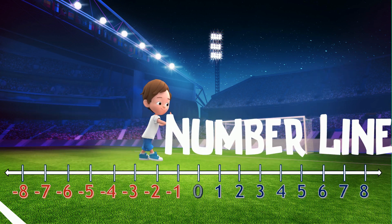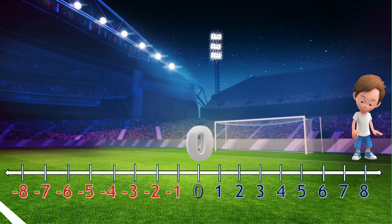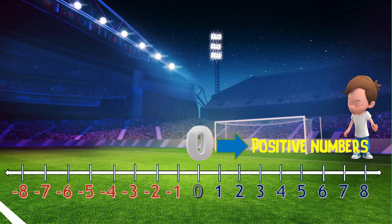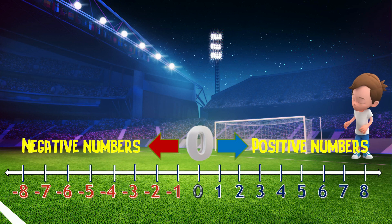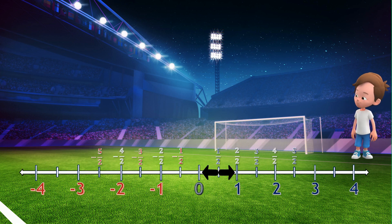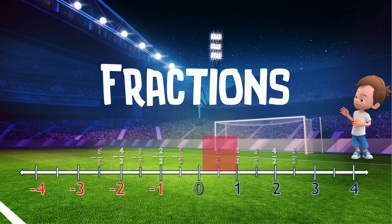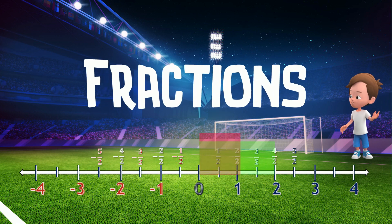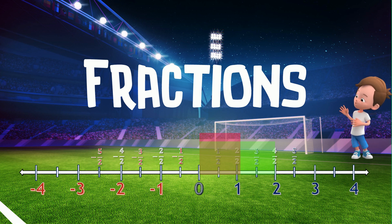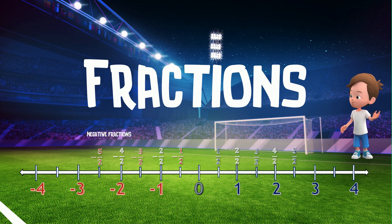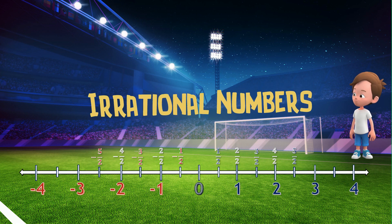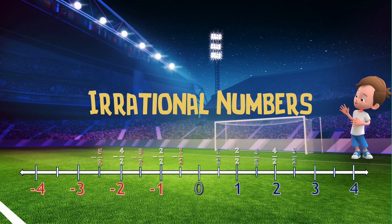Before that, let's first look at the number line. On the number line, to the right of zero are positive numbers, and to the left of zero are negative numbers. In between whole numbers are fractions. Fractions, as we learned in basic math, represent parts of the whole. And yes, there are negative fractions too. Let's not forget irrational numbers — they also have their place on the number line.